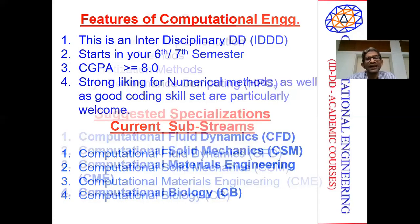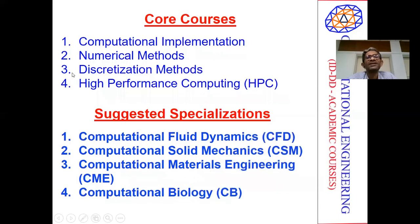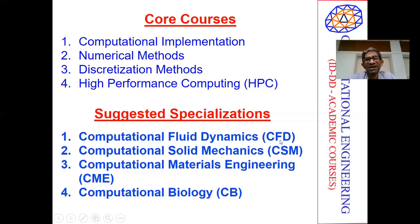The basic core courses come from four traditional strands: computational implementation, where your algorithmic background and data structures background needs to be strengthened; numerical methods, which is certainly very critical; discretization methods, where we expect at least a finite element or finite volume kind of background; and high-performance computing, which is of course the core. These are the four core courses with plenty of options to choose from. Suggested specializations at this point of time are computational fluid dynamics and computational solid mechanics, so that your own energy is not completely diffused, and your background looks very solid in a certain direction rather than diffuse without a clear focus.